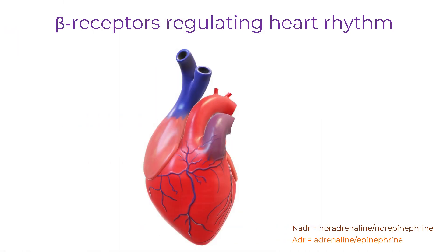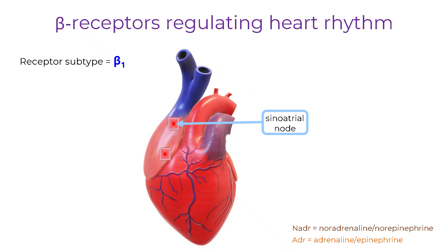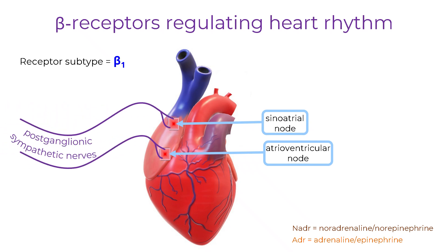There are three subtypes of beta adrenergic receptor, but the beta-1 subtype is the main one in the heart. These receptors are found throughout the myocardium, but the ones important for rhythm are located in the pacemaker regions. The sinoatrial node at the top of the right atrium generates electrical activity and sets the heartbeat. The atrioventricular node at the lower part of the right atrium delays the signal before passing it to the ventricles. These regions are supplied by post-ganglionic sympathetic neurons, which release noradrenaline, acting on beta-1 receptors to speed up the sinoatrial node and increase conduction through the atrioventricular node.